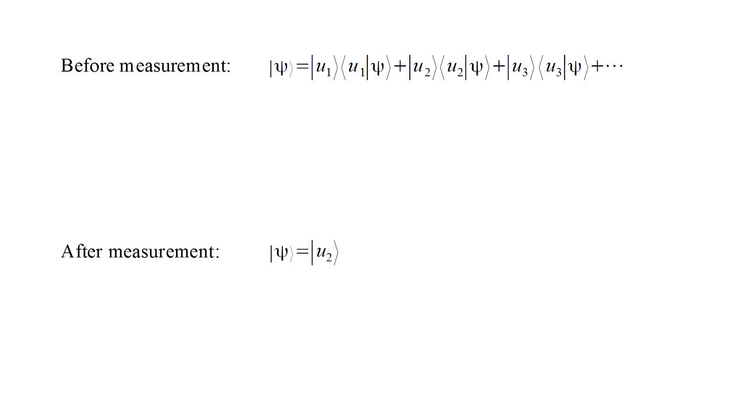Now this is a very strange picture. As we've mentioned, wave function collapse is not described by Schrödinger's equation, and there is no detailed description of what goes on during the measurement. If we measure the system to be an eigenstate u sub 2, then somehow the amplitude of state u sub 1 becomes 0, the amplitude of u sub 2 becomes 1, the amplitude of u sub 3 becomes 0, and so on, leaving us just with the eigenstate u sub 2.